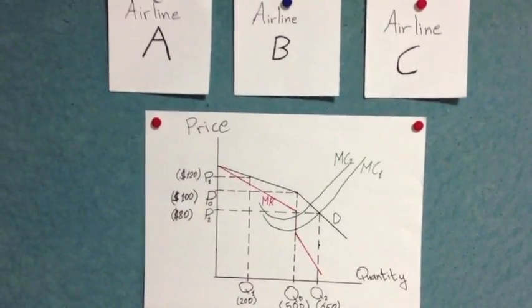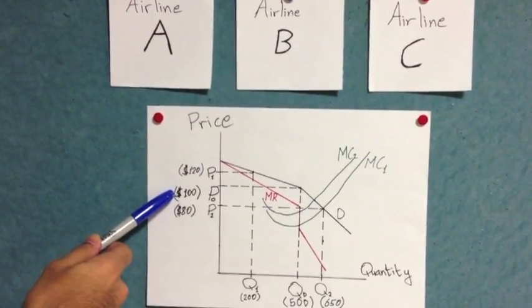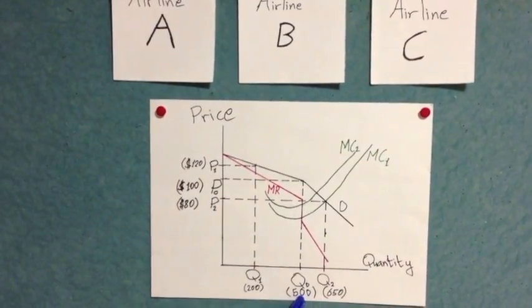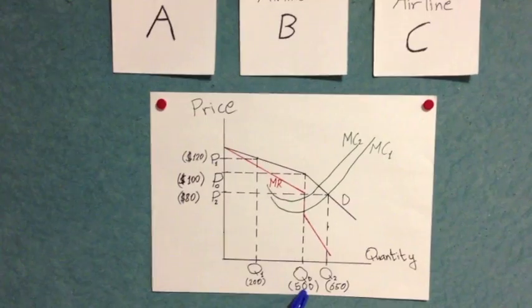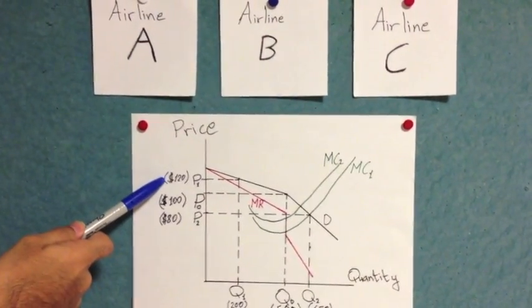Each of these airlines sell their ticket at about $100, and they sell a quantity of approximately 500 tickets a week. Let's assume Airline A decided to raise their price to $120.